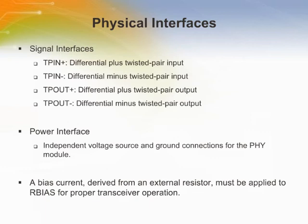PIC18F97J60 family devices all provide a dedicated 4-pin signal interface for the Ethernet module. The PHY transceiver module encodes and decodes the analog data that is present on these twisted pair interfaces and sends or receives it over the network. In addition to the signal connections, the Ethernet module has its own independent voltage source and ground connections for the PHY module. Separate connections are provided for the receiver, the transmitter, and the transmitter's internal phase lock loop. The PHY module also has a separate bias current input pin, RBIAS, and a bias current derived from an external resistor must be applied to RBIAS for proper transceiver operation.